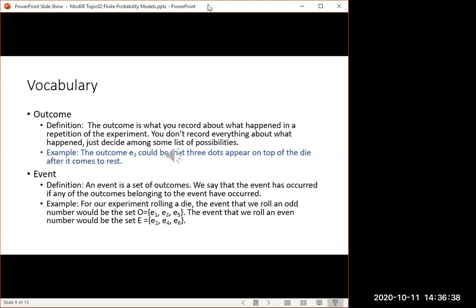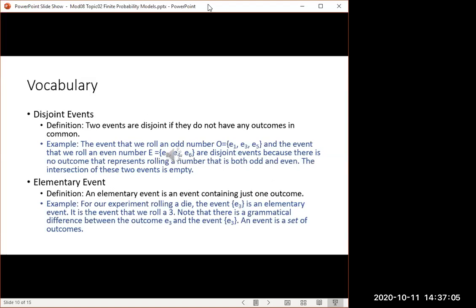You could list all the possible outcomes and make a little symbol for each outcome. An event is a set of outcomes. So the event that you roll an odd number would be the set of outcomes E1, E3, E5. You say that event O happened if the outcome was any of the outcomes belonging to the set O. Two events are disjoint if they do not have any outcomes in common. For example, the event that we roll an odd number and the event that we roll an even number are disjoint events because there's not any outcome that's both odd and even. The intersection of those two sets of outcomes is the empty set.